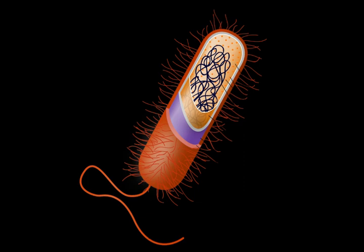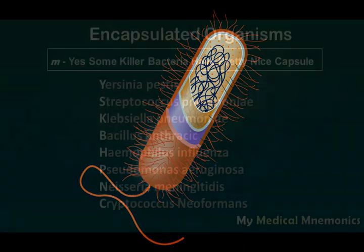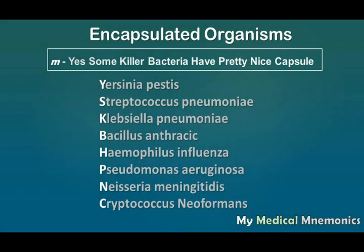The importance of this encapsulation is that it is helpful for their pathogenicity. Patients such as asplenic patients, children, patients with B-cell deficiency, and patients with complement deficiency are more susceptible to these encapsulated organisms. So it is very helpful to remember the names of these encapsulated organisms.